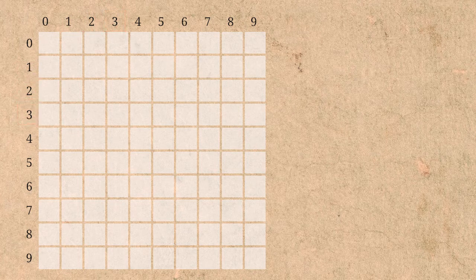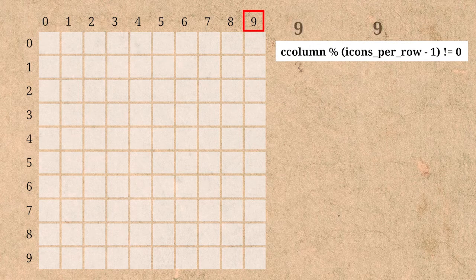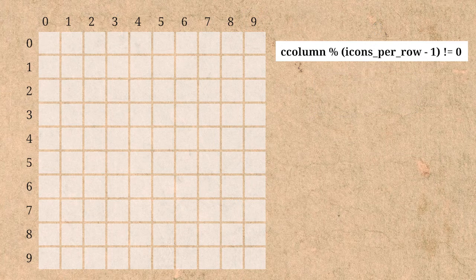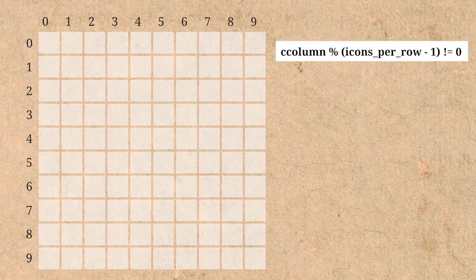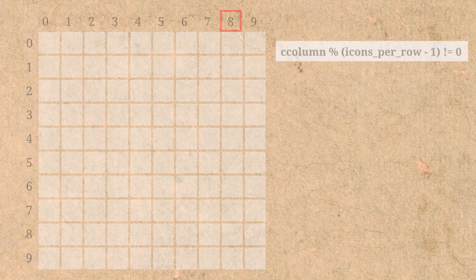The very last column of the grid is going to have the index of nine. This is why the calculation works — if we're currently on the ninth column, c_column will have the value of nine. Dividing nine by nine gives a clean division, indicating we want to continue on the next row. But on the eighth column we don't get a clean division, so we continue on the same row.